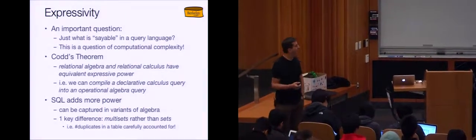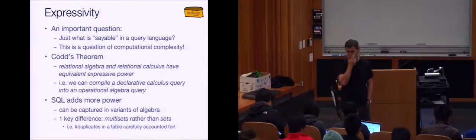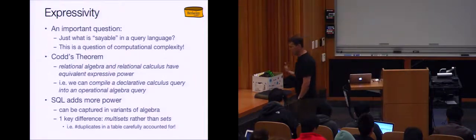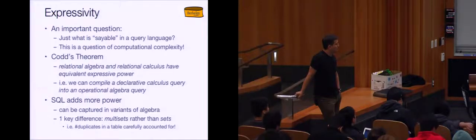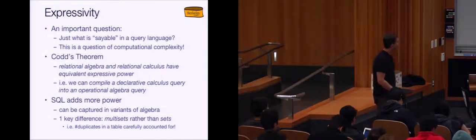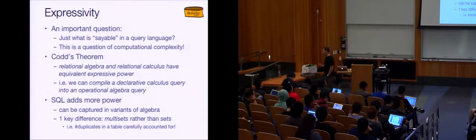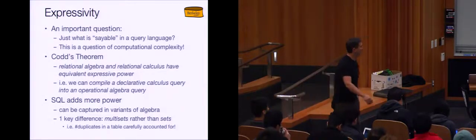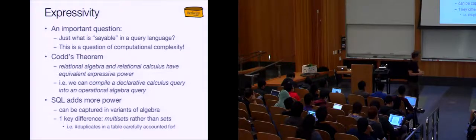An important question you should ask with any language is just what is sayable in that language. Query languages are often not Turing complete, so you can't say everything you can say in C or assembly. It's a question of computational complexity — what class of algorithms can you express? SQL is actually a very powerful language; you can even say exponential things in SQL. The basic relational algebra can't say all of polytime, depending on whether you have subtraction. Codd's theorem says the algebra and the calculus have equivalent expressive power.